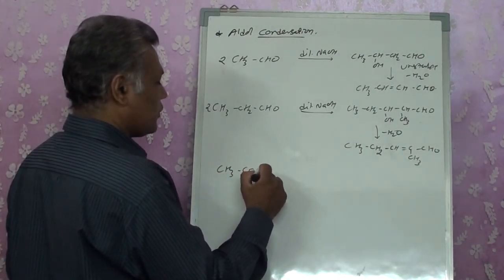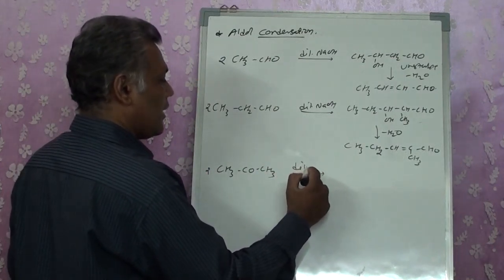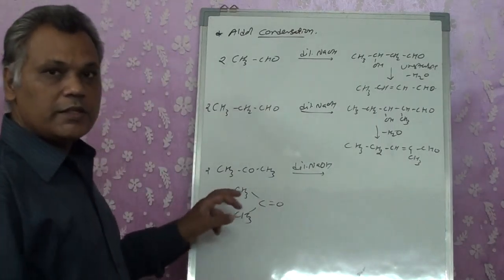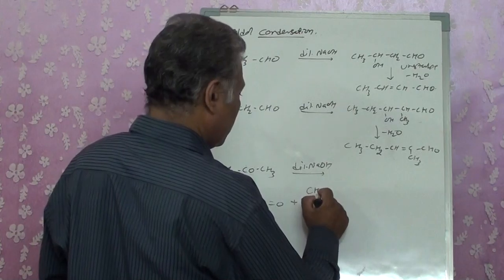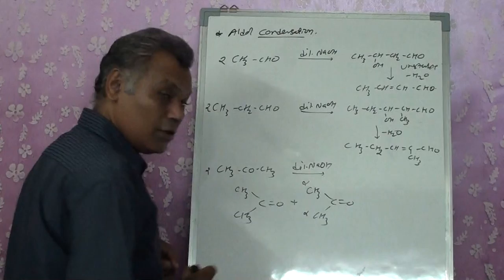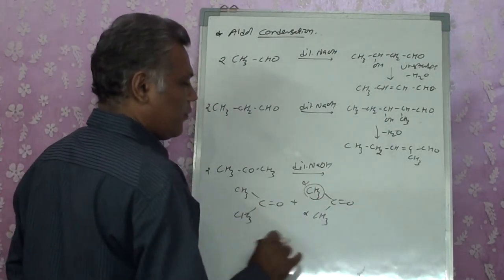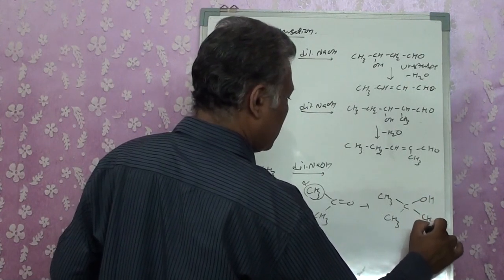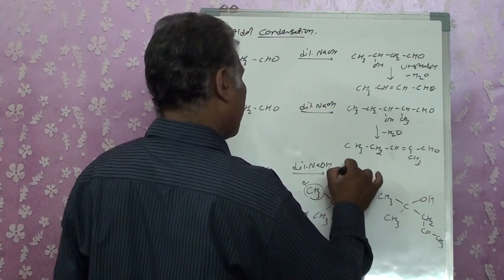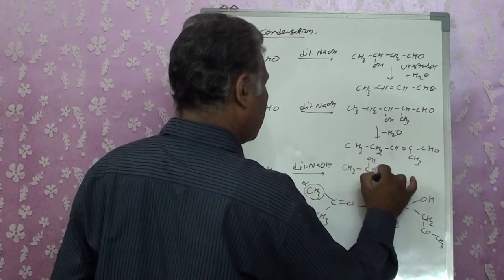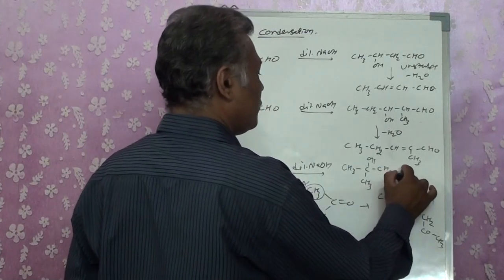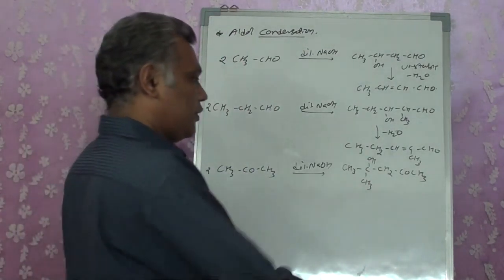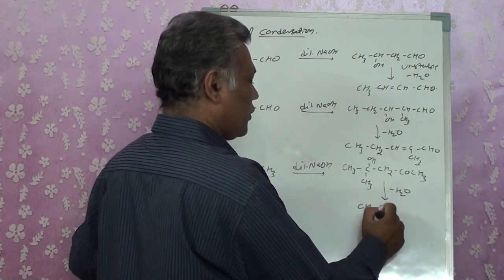Let's see if the same reaction is possible for ketones. Taking CH3COCH3 — two moles with dilute NaOH. The ketone CH3C=OCH3 reacts with another molecule of the same. Both have alpha hydrogens; one loses its hydrogen. The oxygen gains the hydrogen, and the alpha carbon fragment attaches, giving the product CH3C(OH)(CH3)CH2COCH3.